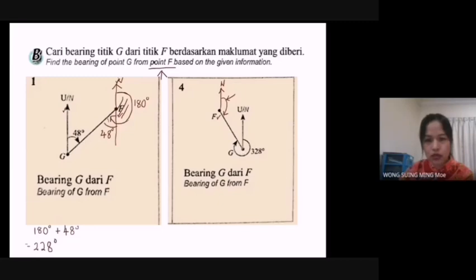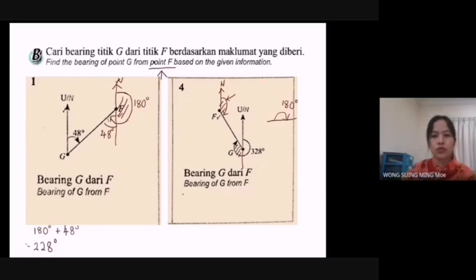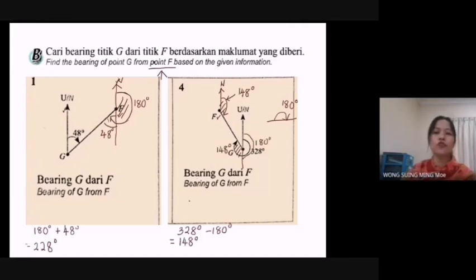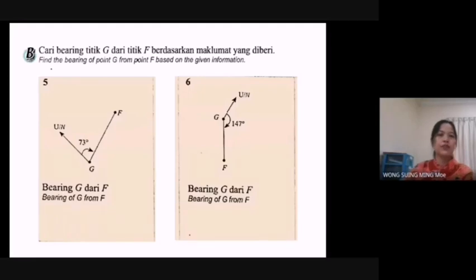These two angles are alternate angles. To get this angle: 328° minus 180° equals 148°. So the bearing of G from F is 148°.